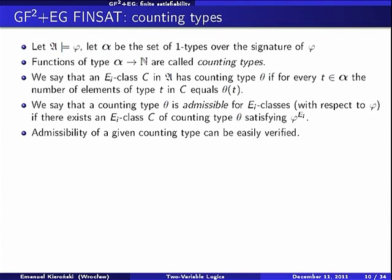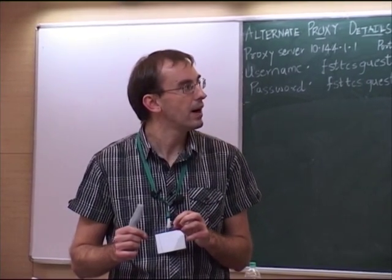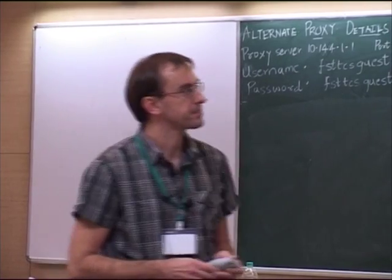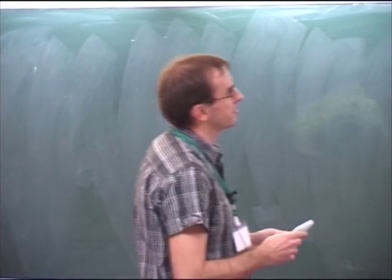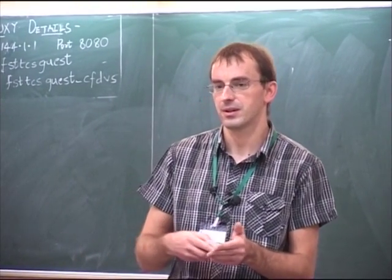We say that a counting type is admissible for E_i classes with respect to formula phi if there exists an E_i-class C realizing exactly this counting type which satisfies the part of the formula related to E_i. In other words, a counting type is admissible if we can build an E_i-class which from a local point of view is allowed to appear in models of phi. Admissibility is a simple property — we can simply guess the structure and perform model checking.